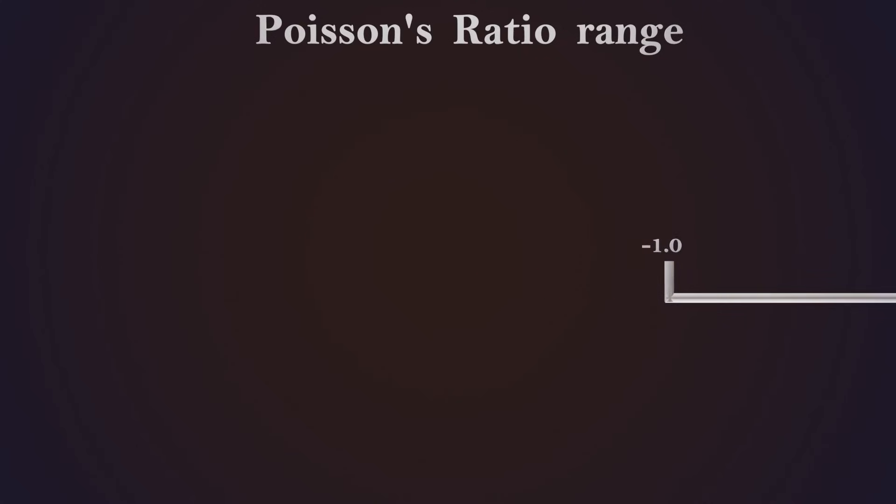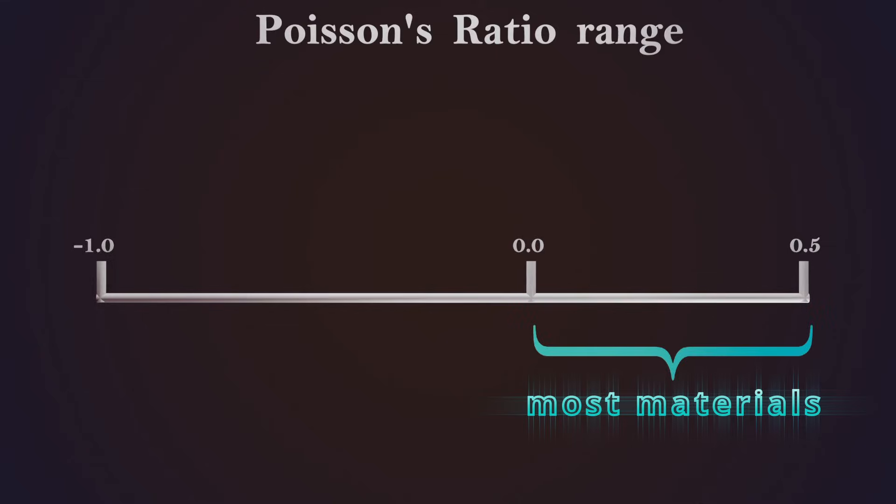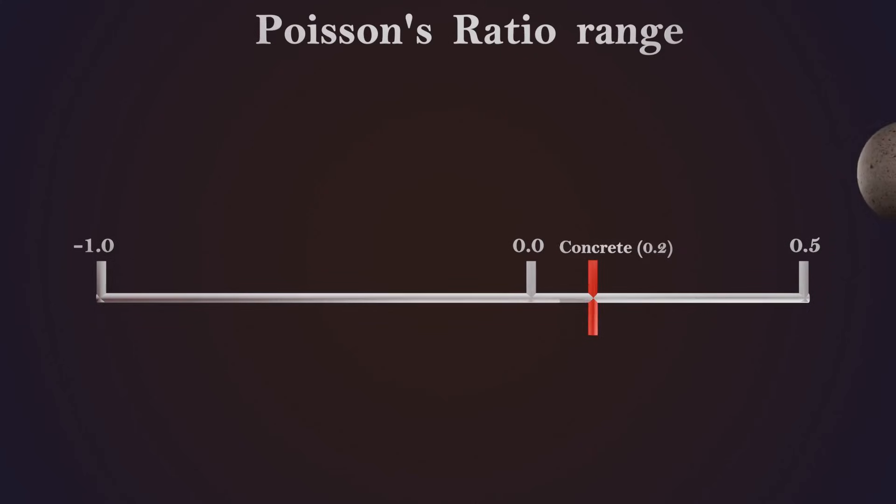Now let's look at some typical values of Poisson's ratio for different materials. The theoretical range of Poisson's ratio goes from -1 all the way up to 0.5. However, most materials fall between 0 and 0.5. Here are some common Poisson's ratio values for a few selected materials.